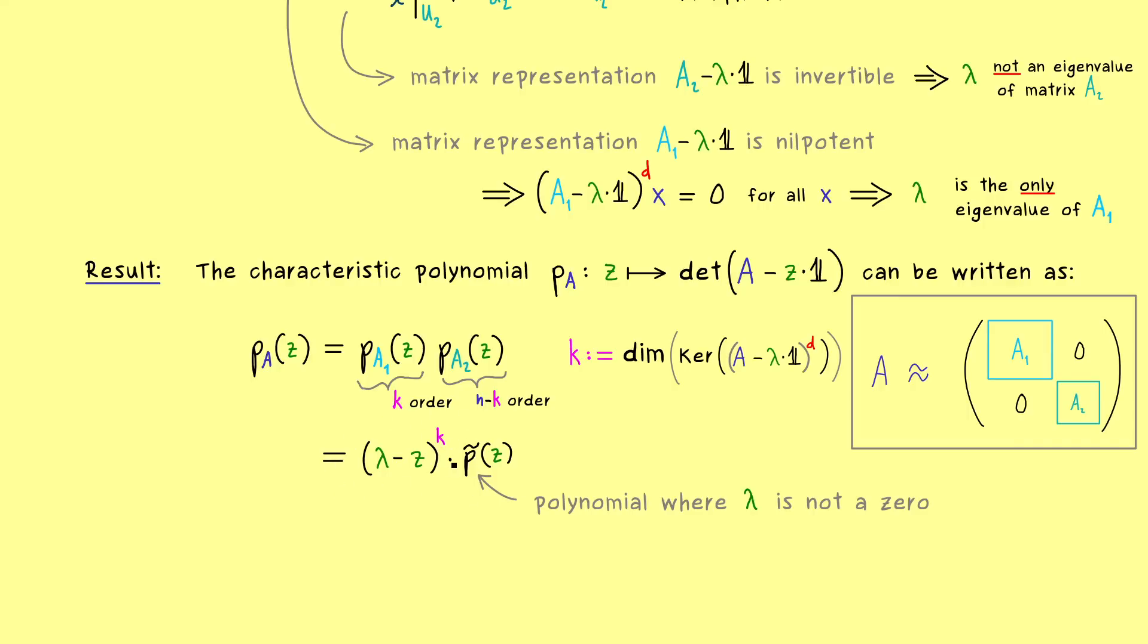Hence this power k here is exactly the algebraic multiplicity of lambda for the matrix A. So this is the important result. The algebraic multiplicity is always given. So you see the generalized eigenspace gives us the algebraic multiplicity of the eigenvalue.